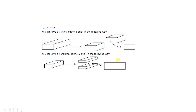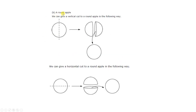When we compare these two rectangles — the vertical cut and horizontal cut cross sections — the vertical cut cross section is smaller than the horizontal cut cross section. They are the same shape rectangle, but one is smaller and another one is bigger. Next, a round apple. A round apple looks like a sphere. When we give a vertical cut to a round apple, it divides in two parts and the cross section is nothing but a circle. When we cut horizontally, that cross section also looks like a circle.